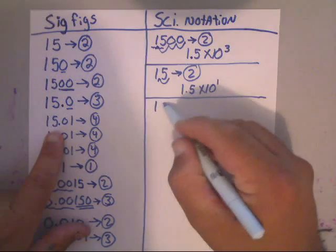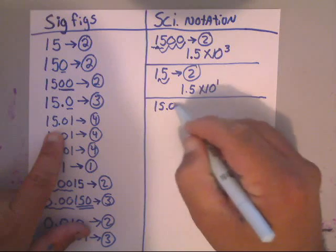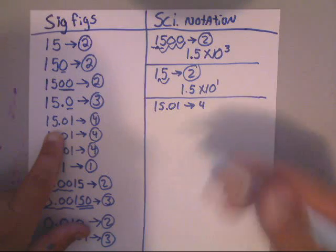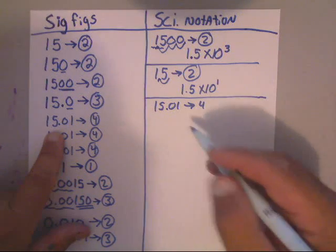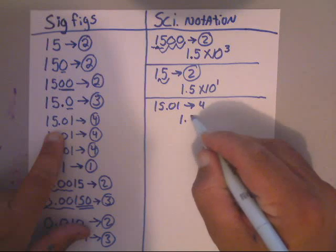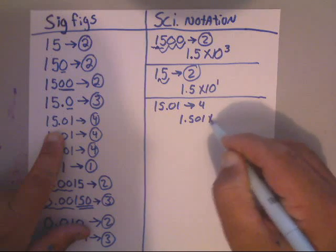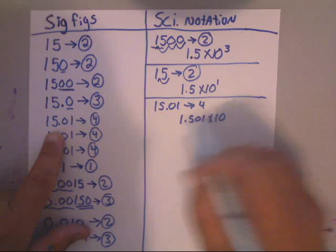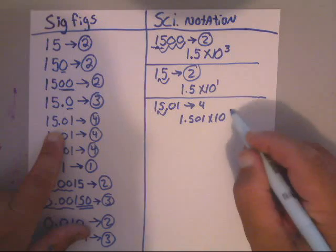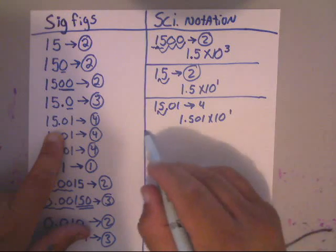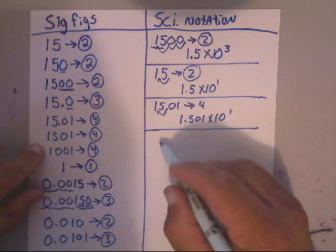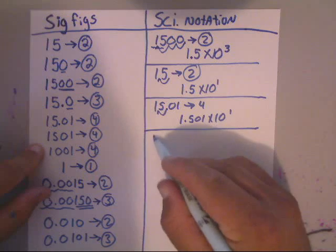Now let's look at another one. Let's say you had the number 15.01. We said earlier that was four sig figs, so when you write it in scientific notation it would be 1.501 times 10 to the first power.